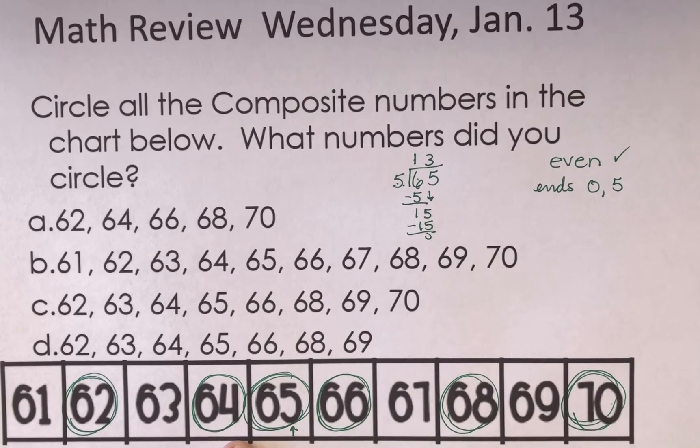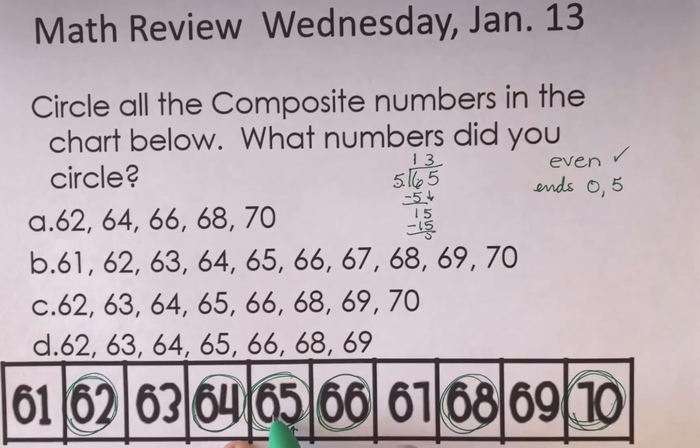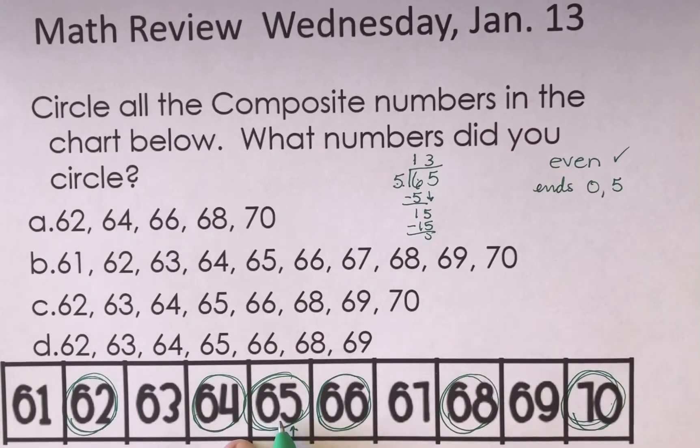This means that 13 times 5 is equal to 65. So 65 has more than two factors because 5 times 13 can give you 65, and so can 65 times 1. All right, so I know 65 is also a composite number.